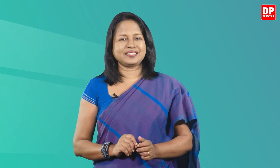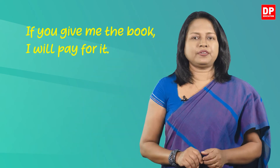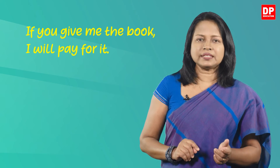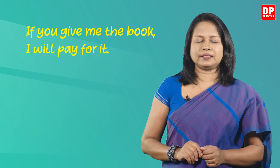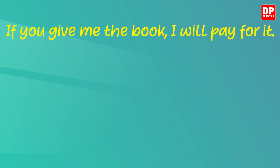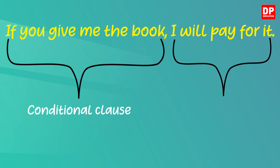Let's understand this with an example. Look at this sentence: 'If you give me the book, I will pay for it.' We call this a conditional sentence because there is a condition in it. This sentence has two clauses: the conditional clause and the result clause. 'If you give me the book' is the conditional clause — if this condition is fulfilled, the speaker is willing to pay for it. So 'I will pay for it' is the result clause, showing the result of fulfilling this condition.